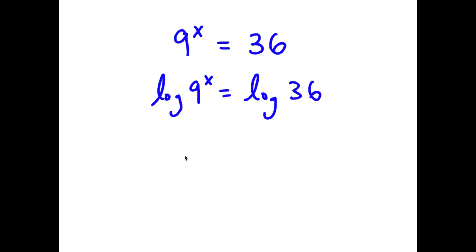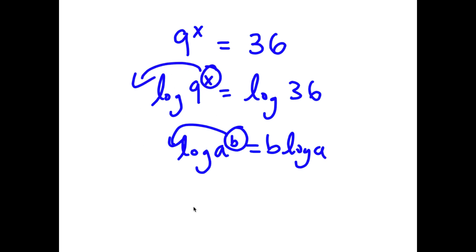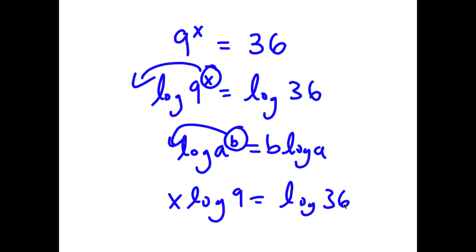If I have something in the form log a to the power of b, I can move the exponent b to the front — so that becomes b times log a. So for log 9 to the power of x, I move x to the front, and now I have x times log 9 is equal to log 36.